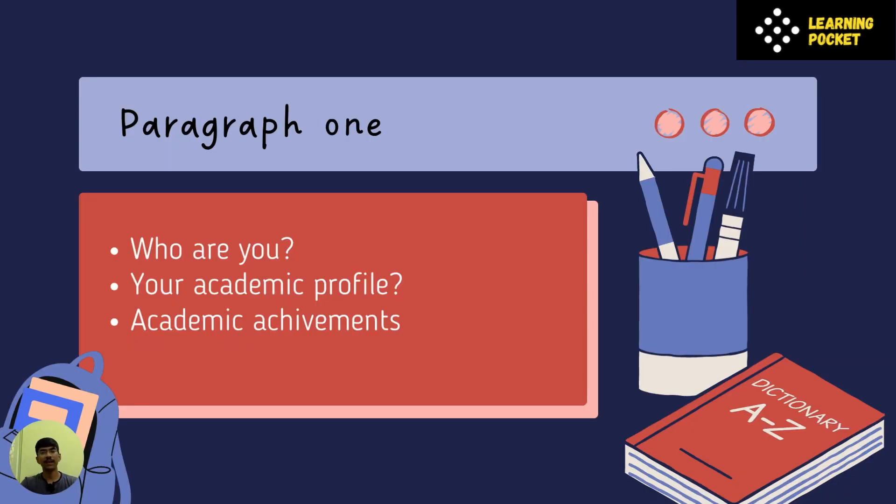The first paragraph is a very important piece that is going to tell the selecting committee which academic background you are from, which year student you are, which course you are enrolled in, which stream you are from, and is it related to the research that you are applying to or not.